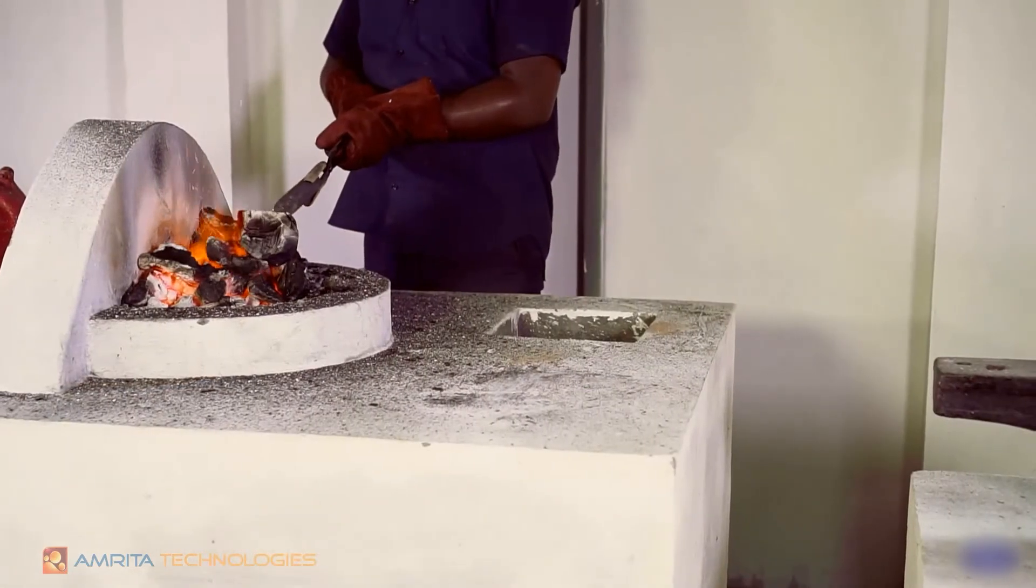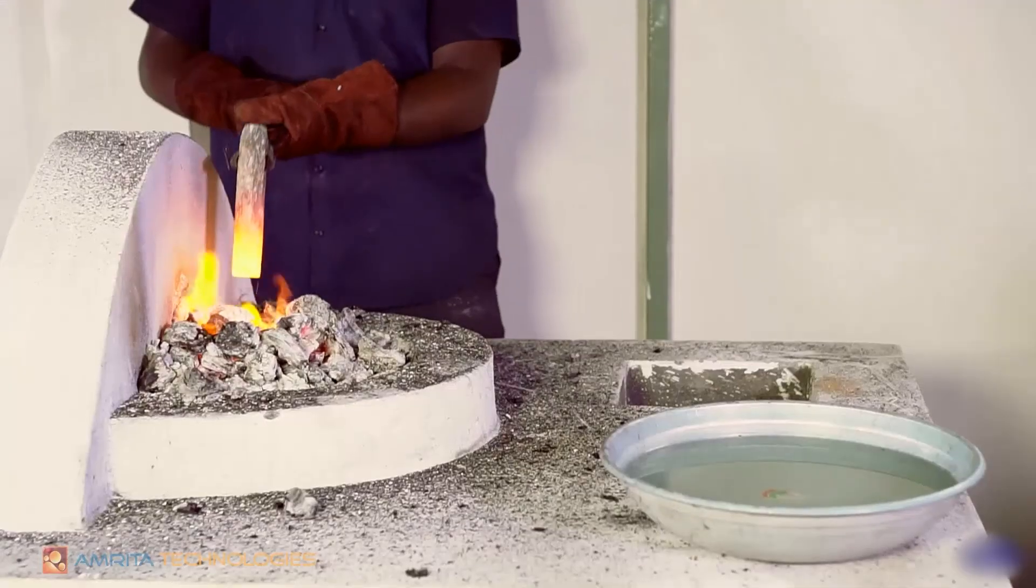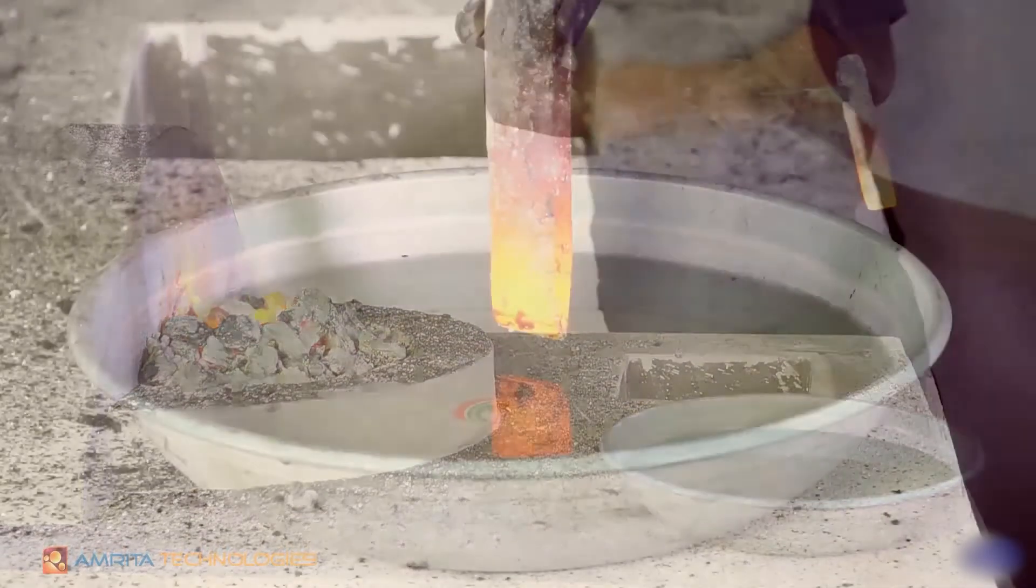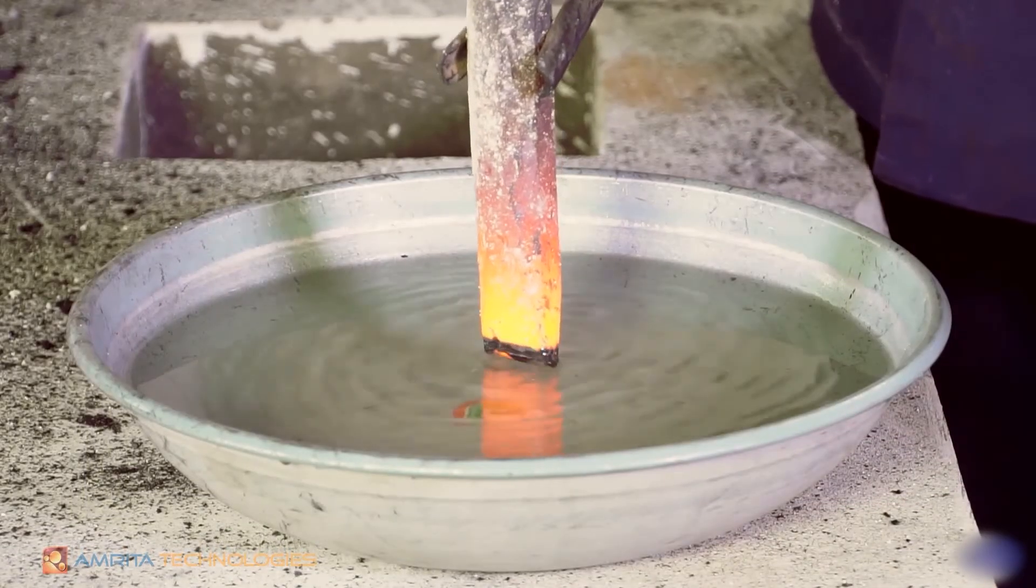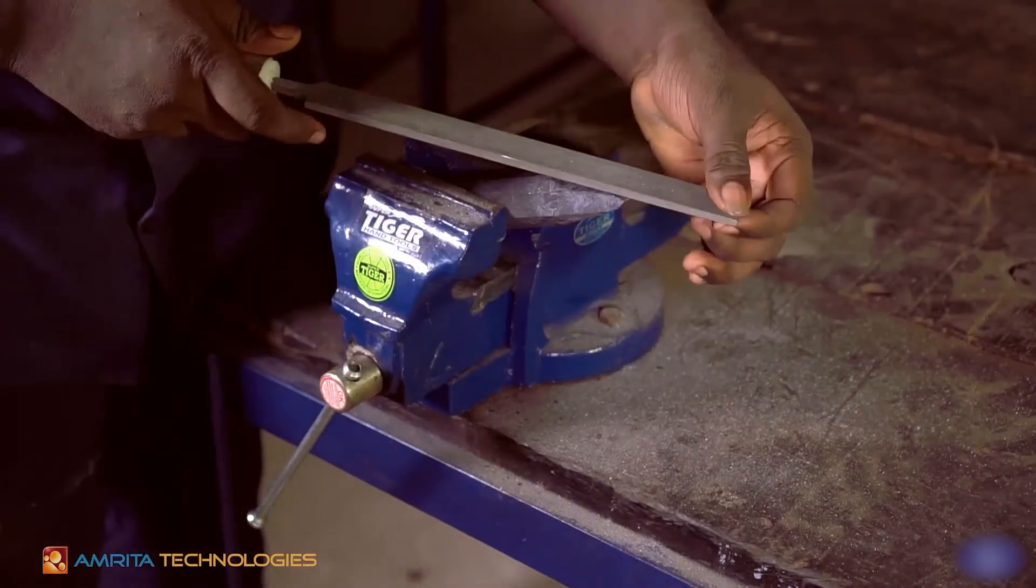Heat about 20mm of the tapered end of the chisel to a cherry red color and quench the chisel in water for hardening. Remove and clean the edge with a file.